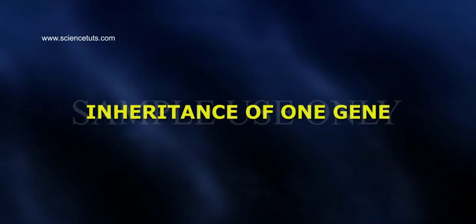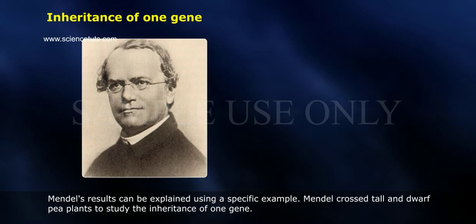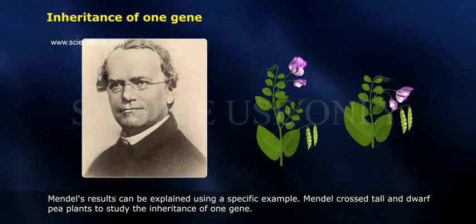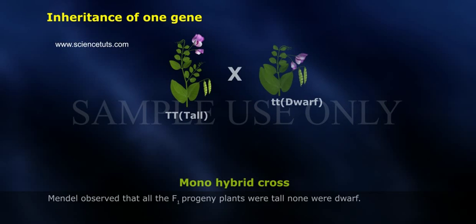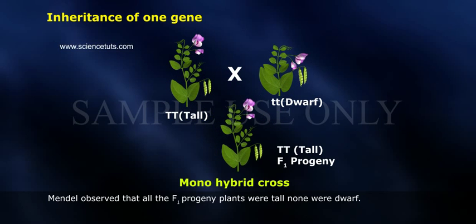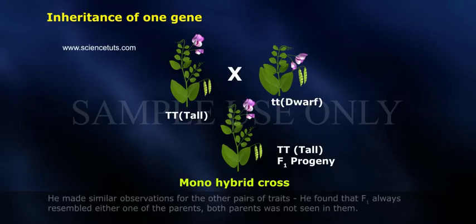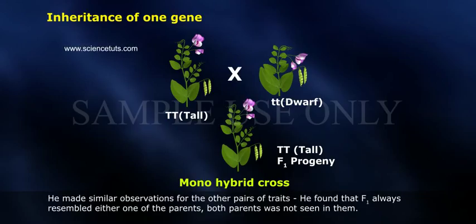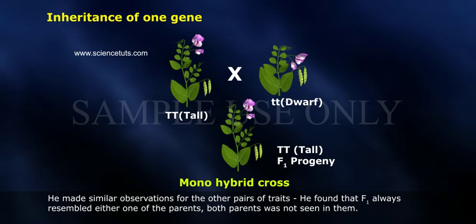Mendel's results can be explained using a specific example of inheritance of one gene. Mendel crossed tall and dwarf pea plants to study the inheritance of one gene. He observed that all the F1 progeny plants were tall — none were dwarf. He made similar observations for the other pairs of traits, finding that F1 always resembled either one of the parents; a blend of both parents was not seen in them.